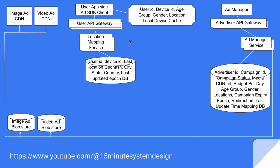The user also needs to sign up first on the consumer platform. Once logged in, the user device can cache data like user ID, device ID, age group, gender, and location in the local device cache. There is also a location mapping service, which is responsible for translating the last location of the device into a geo hash along with the city, state, and country for ad serving purposes.